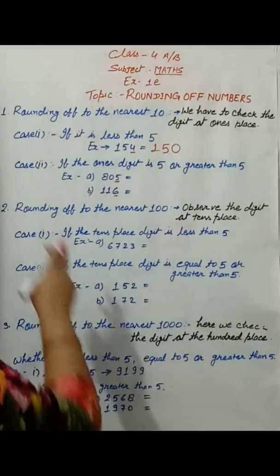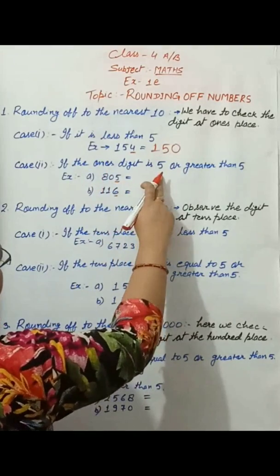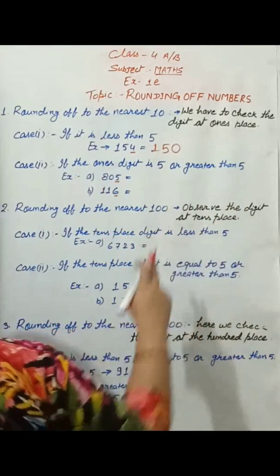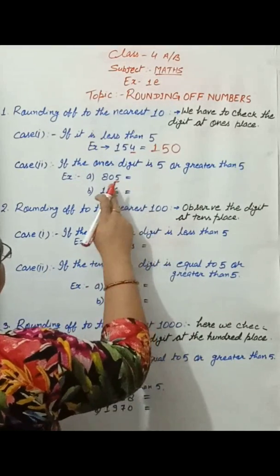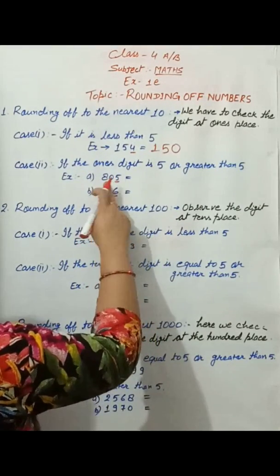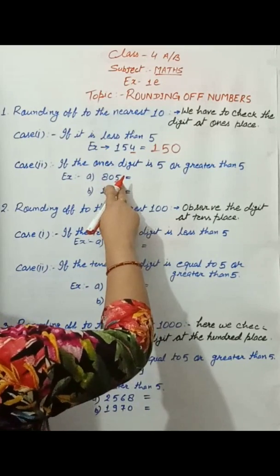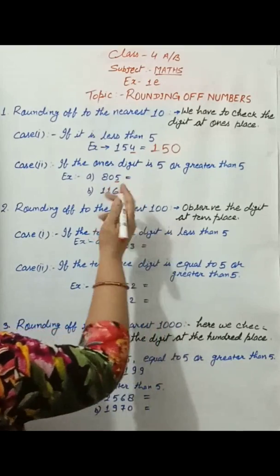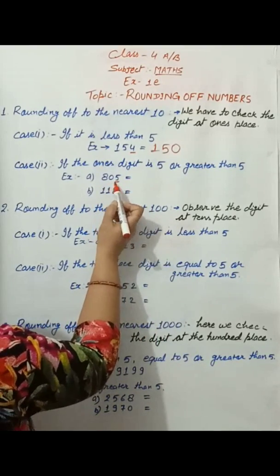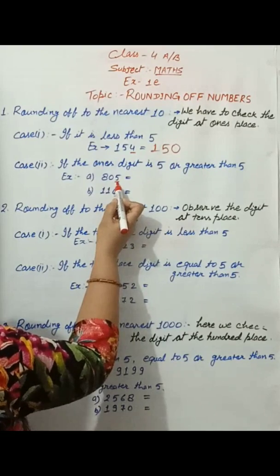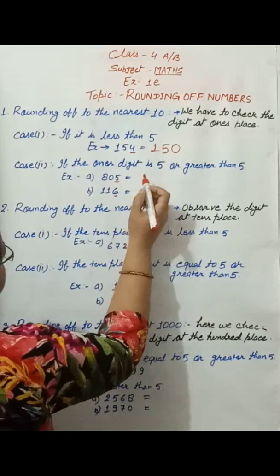Case two: if the ones place digit is five or greater than five, we replace the ones digit by zero and add one at the tens place. Meaning thereby, replace the ones digit by zero and add one at the tens place.